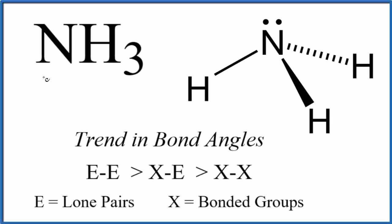Let's take a look at the bond angles for NH3. This is ammonia. And really what we want to know is why does NH3 have a bond angle of 107 degrees?